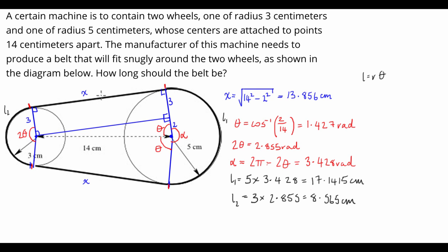So now that we know the two arcs, and we also know X, we can then sum them to find the length of the belt that we require. So we're going to say length is going to be equal to 2X, or 2, times 13.856. Add L1, which is 17.1415. Add L2, which is 8.565. And that gives us a total length of 53.42 centimeters.